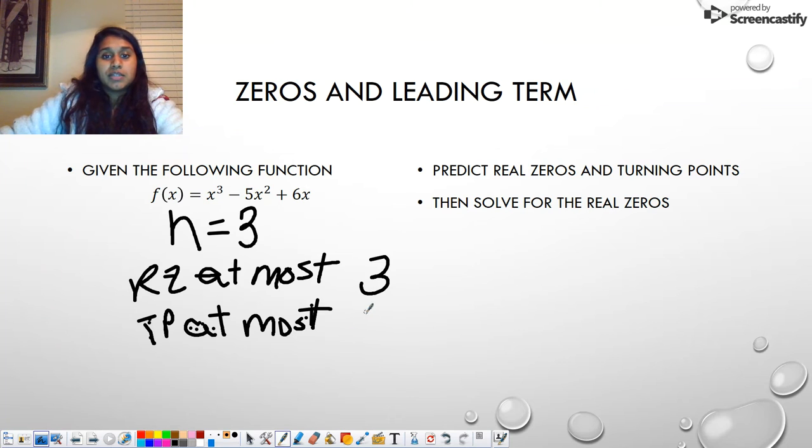My turning points at most, N minus one. So three minus one is two. Okay. So at most, I have three real zeros. At most, I have two turning points.